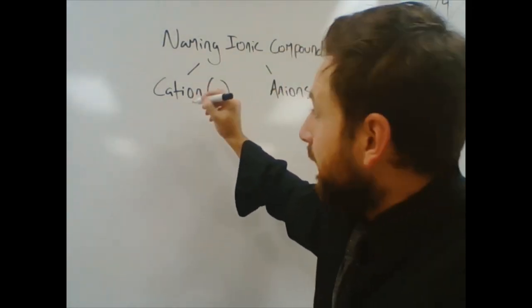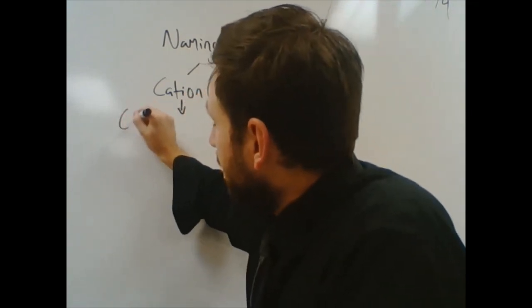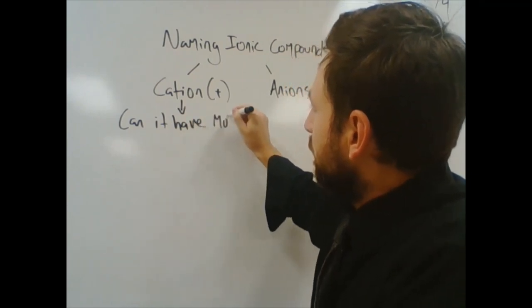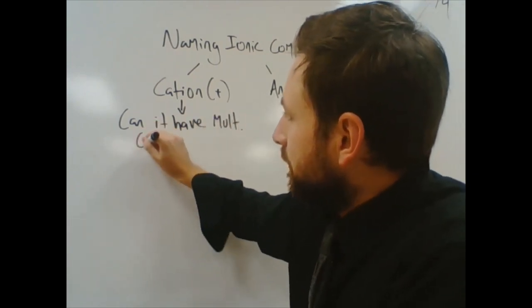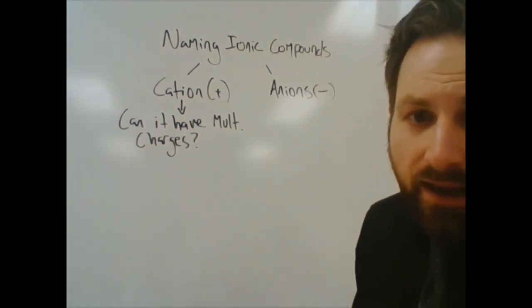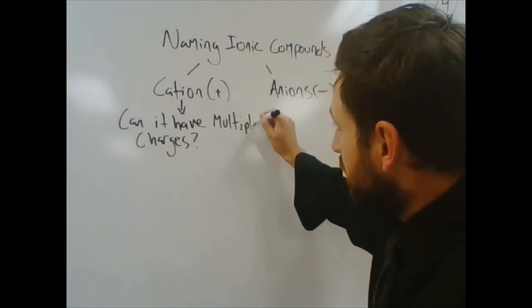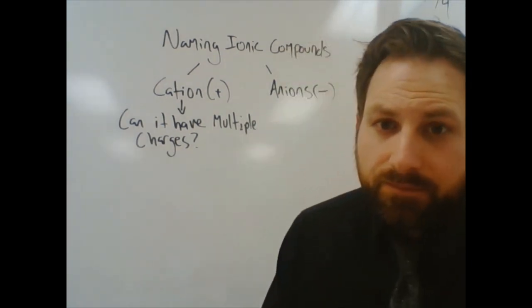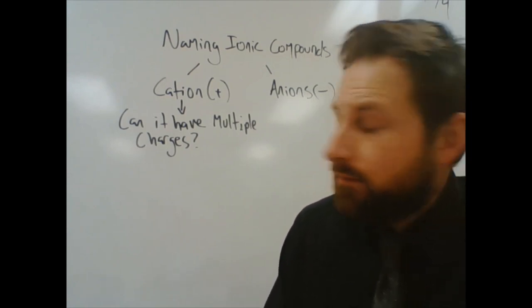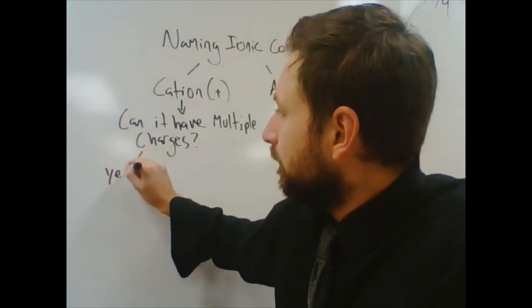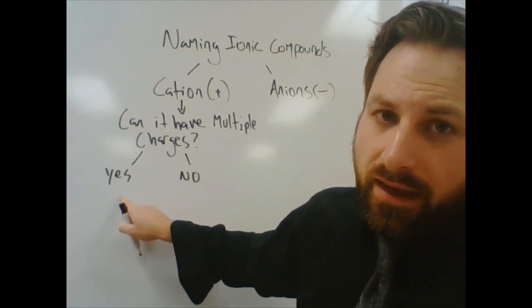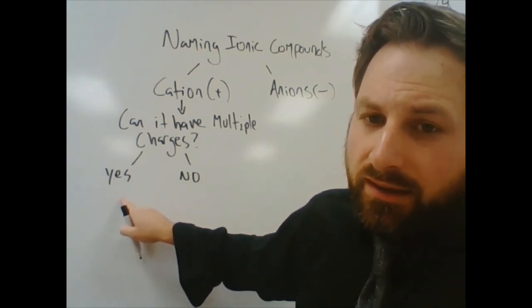When you are looking at cations, you have to ask yourself, can it have multiple charges? How do you know that? If the answer is yes, it can have multiple charges. That means it is a transition metal.